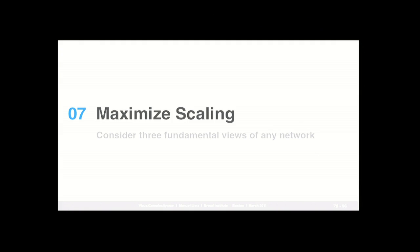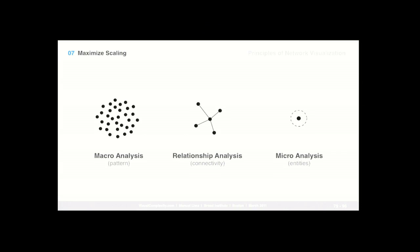The seventh principle is understanding the value of three key visualization views within any network visualization. The first is macro analysis — understanding the pattern itself, finding key groups at a glance. Then you need to zoom in for relationship analysis — the connectivity amongst the given elements. The third and final key view is micro analysis — looking at individual entities, individual nodes, with a really qualitative level of information regarding those individual entities.